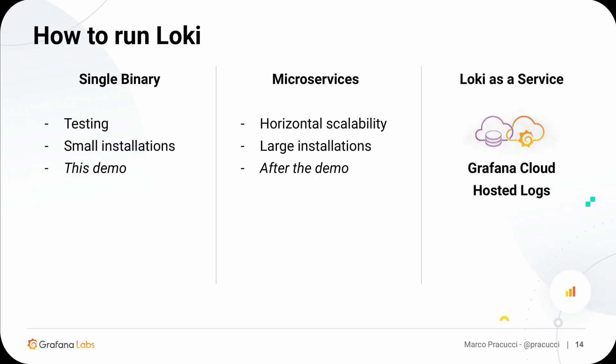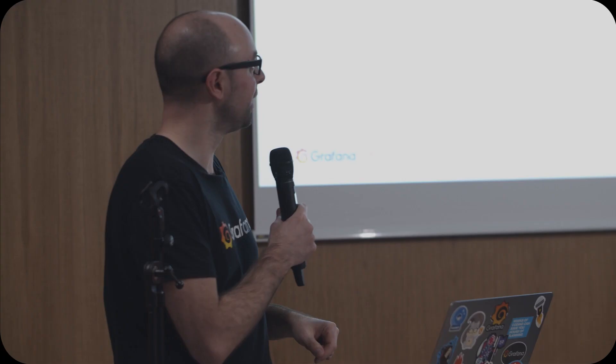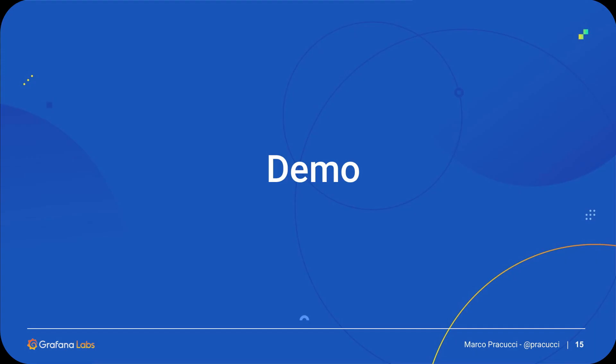The third way is to use Loki as a service. Grafana has a cloud offering called HostedLogs, which means we run Loki for you. You configure Promptail on your nodes, push the logs to Loki managed by Grafana, and you get back an HTTP endpoint which you can use in Grafana, the dashboarding tool, to query back your logs.